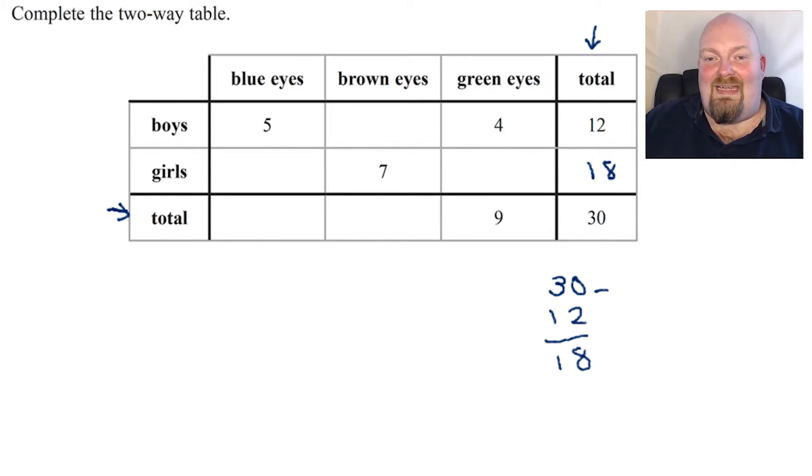If I go across the green eyes now, you can see that there were four boys with green eyes and nine people all together. So again, I'm going to do nine, take away four, and that leaves me with five. So there were five girls with green eyes.